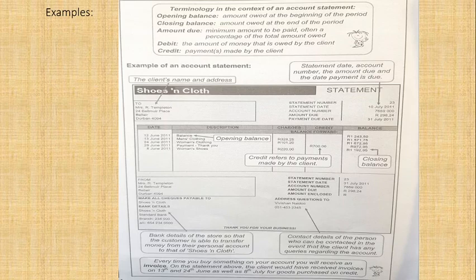What is very important is the terminology in the context of an account statement. The opening balance is the balance they start with. You'll see the opening balance here is one thousand two hundred and forty three Rand and fifty cents. The closing balance is the amount owed at the end of the period. And the amount due is the minimum amount that is to be paid, often a percentage of the total amount owed.